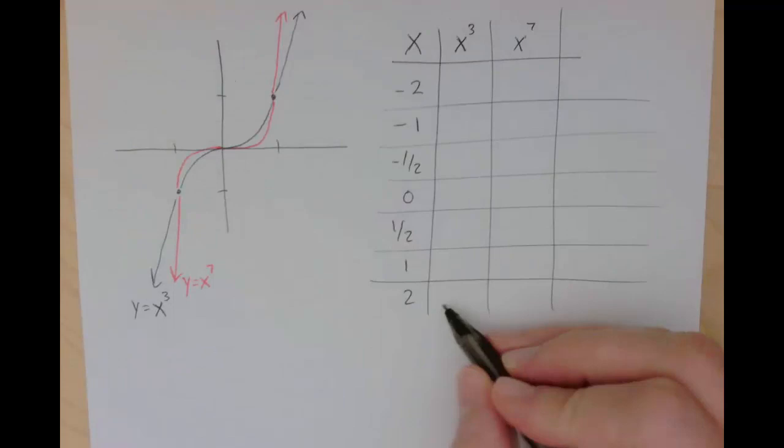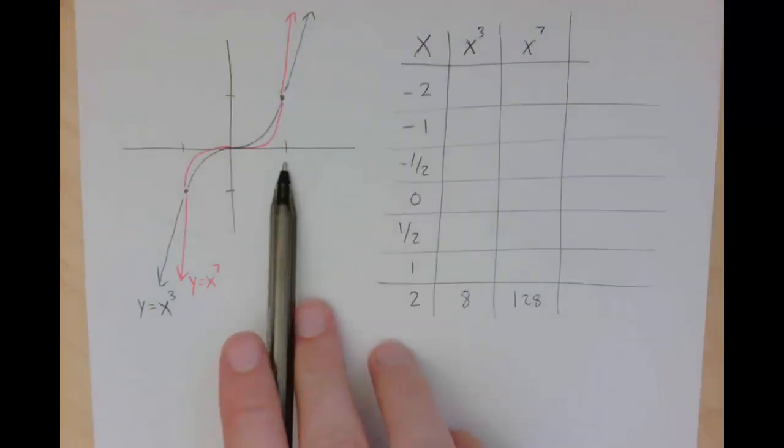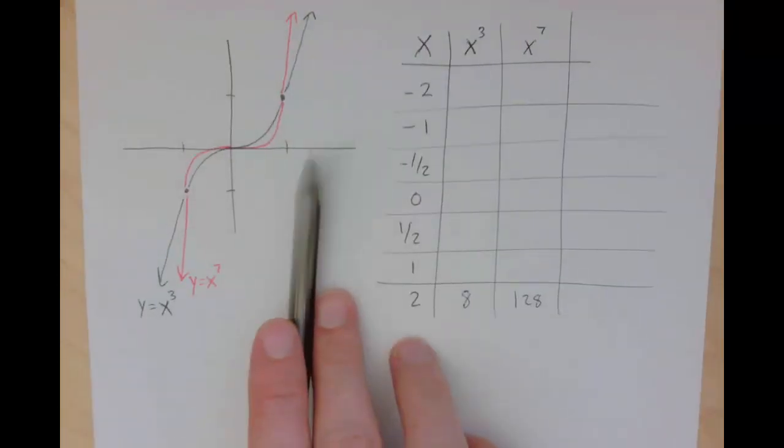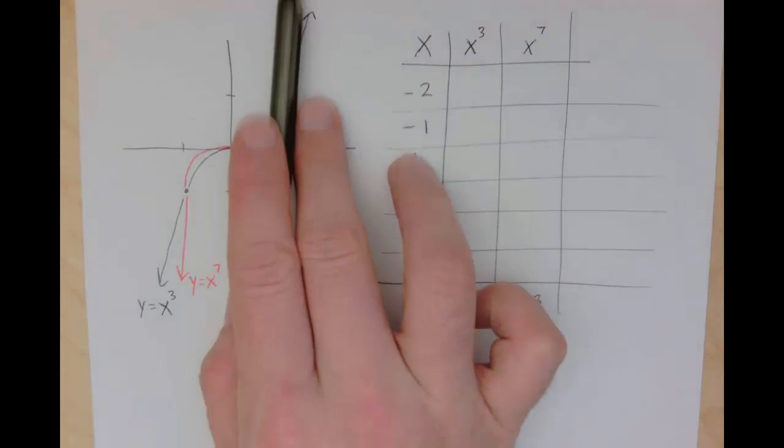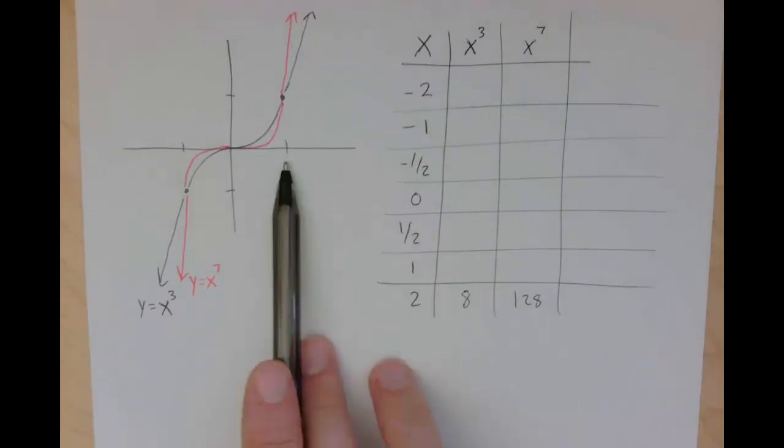So for example, 2 to the 3rd power is 8, but 2 to the 7th power is 128. So clearly, if you have an input that's a positive number larger than 1, the higher the exponent, the higher the point at that value, and so the steeper the graph will be growing for values that are larger than 1.